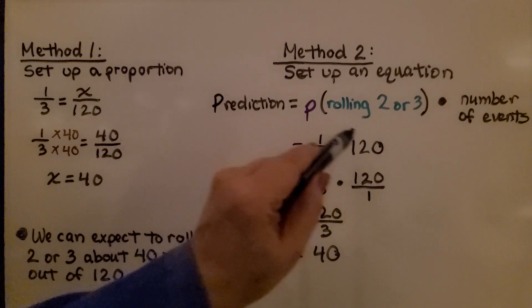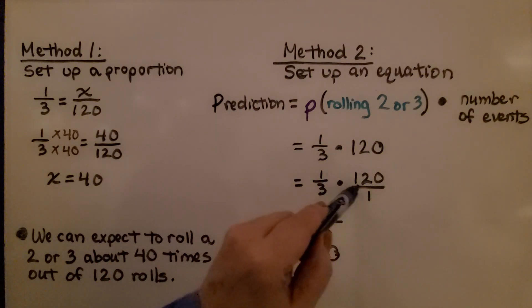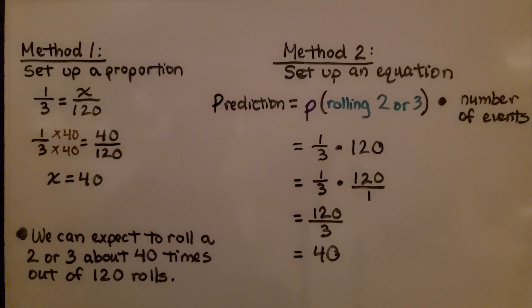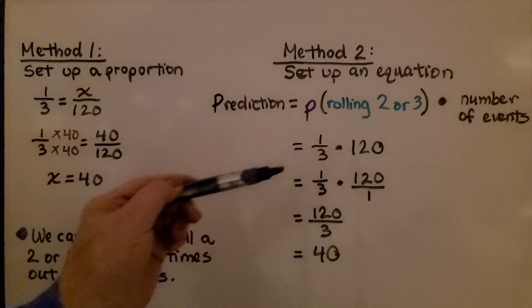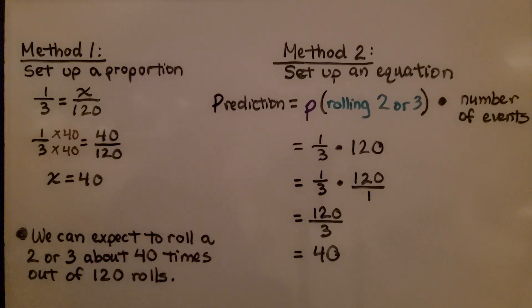Some of you can just do the 1 times 120 and put it over the 3. Some of you might find it easier to put the 120 as a fraction greater than 1 and use 1 as a denominator. Then you can multiply straight across. We get 120 over 3. 120 thirds. 120 divided by 3 is 40. We know our prediction is 40.